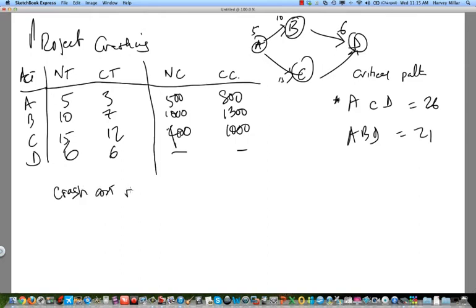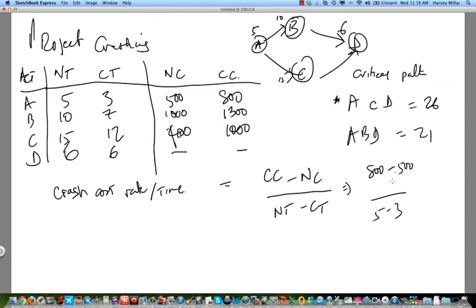So one of the things that we actually determine is the crashing costs, crash cost rate per unit time. So in this case, we will calculate that as your crash costs minus your normal costs divided by your normal time minus your crash time. So for example, for activity A, if we were to do this, it would be 800 minus 500 divided by 5 minus 3. So there's a difference of two days in here and a $300 difference. So $300 divided by 2 is $150 per week or per day or whatever the unit is.